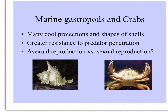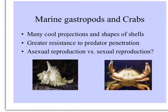Here are a couple of examples of organisms with armature that protects them from their predators. On shells of gastropods, many shells have cool projections and shapes that make them especially hard to crack or penetrate. Imagine if these species reproduced exactly the same offspring as the parents — predators could evolve more strength or different methods of penetrating the shell, soon conquering and eliminating that species, whereas if they reproduce sexually, some may be eaten but others may be strong enough to resist.